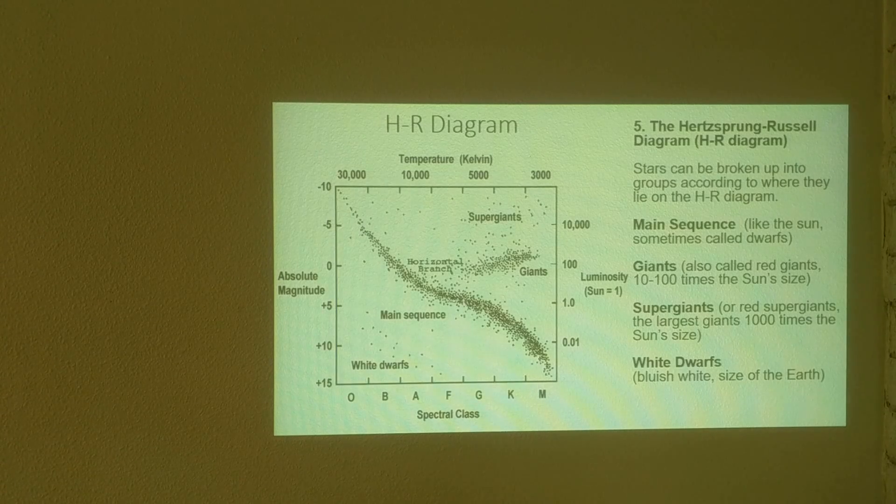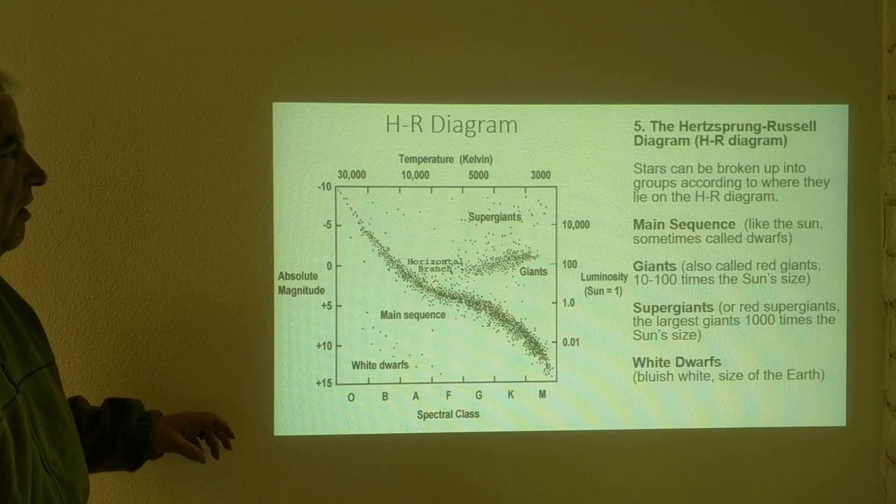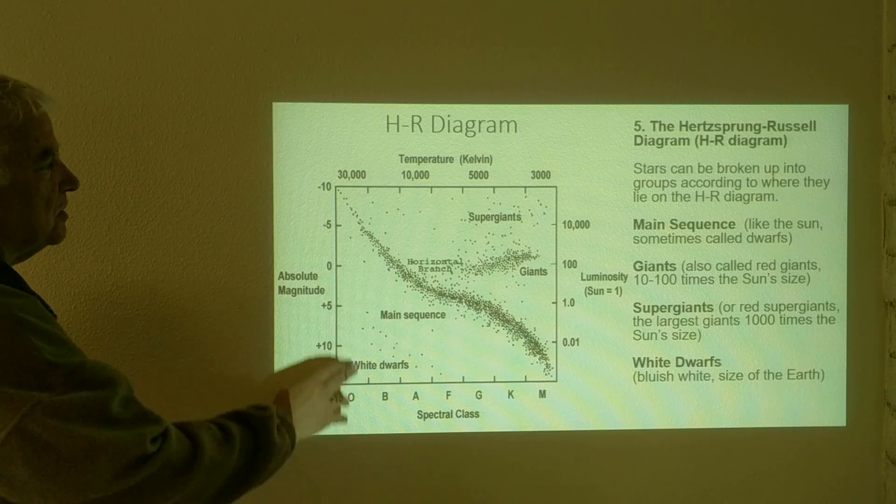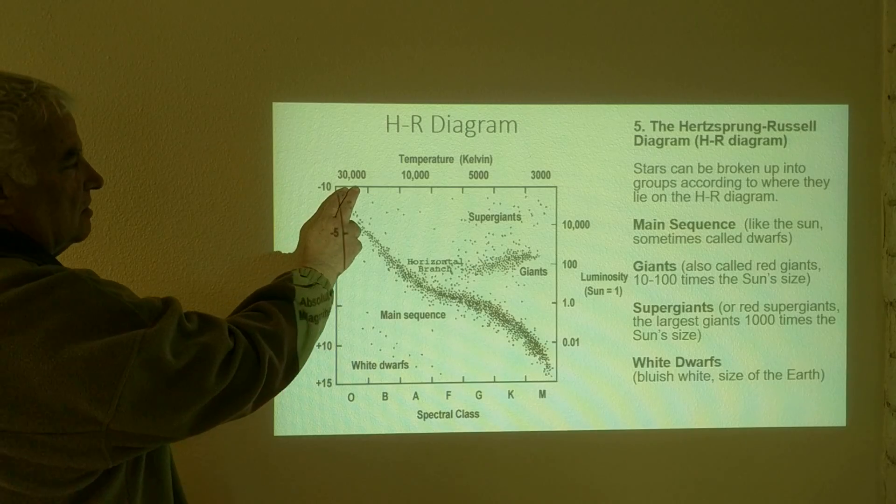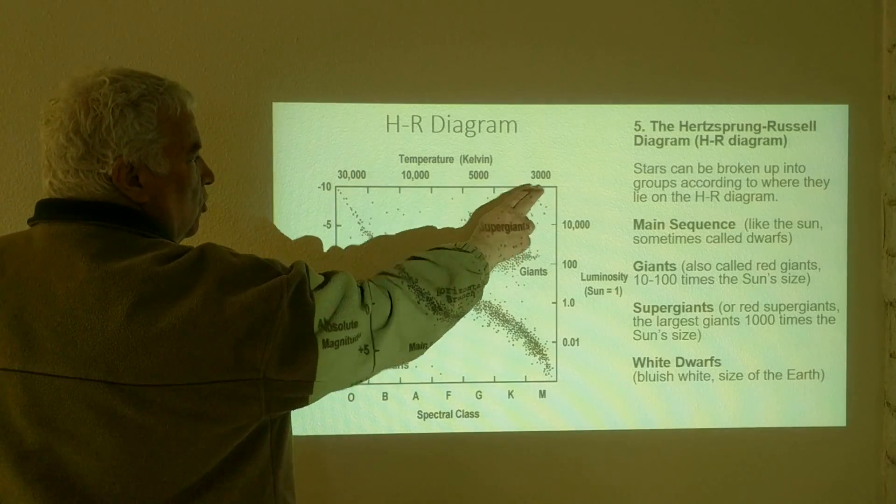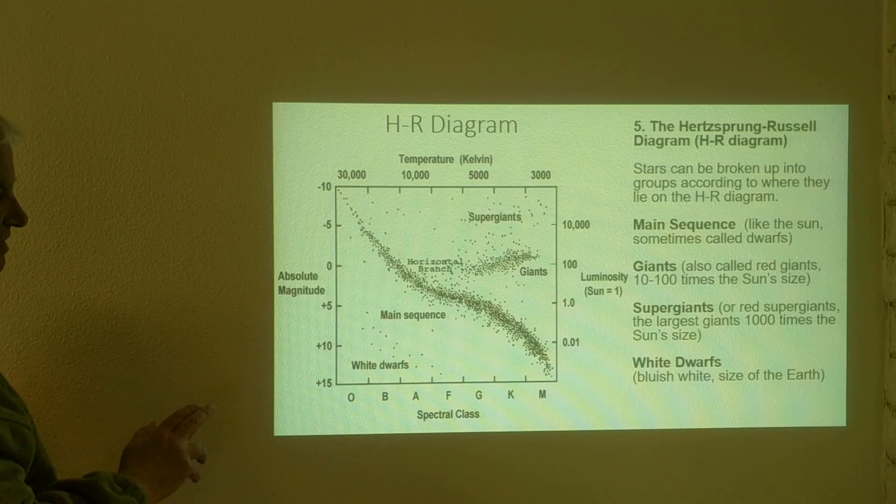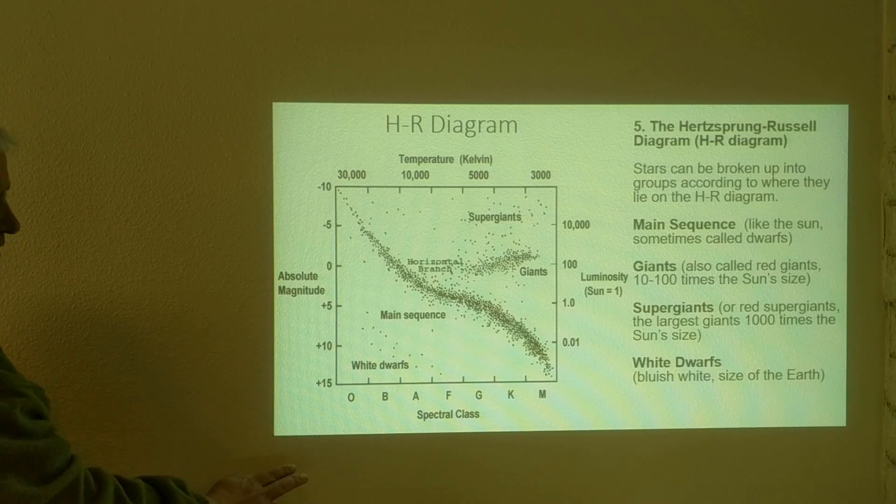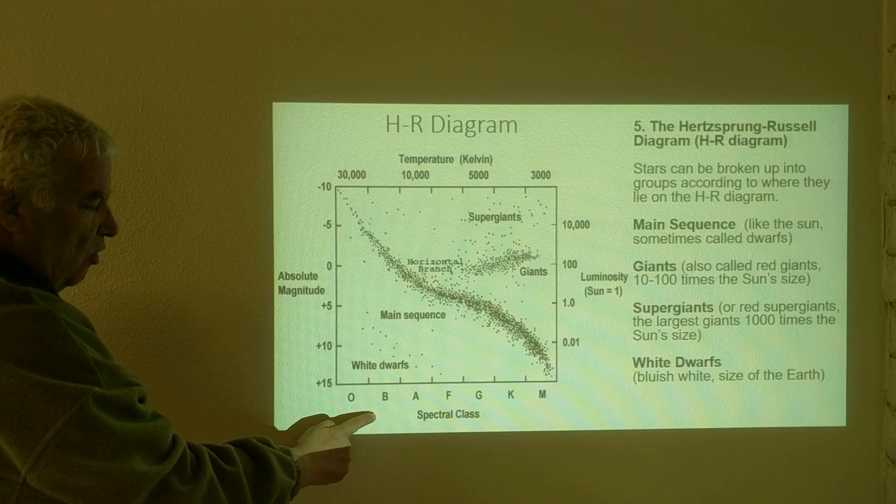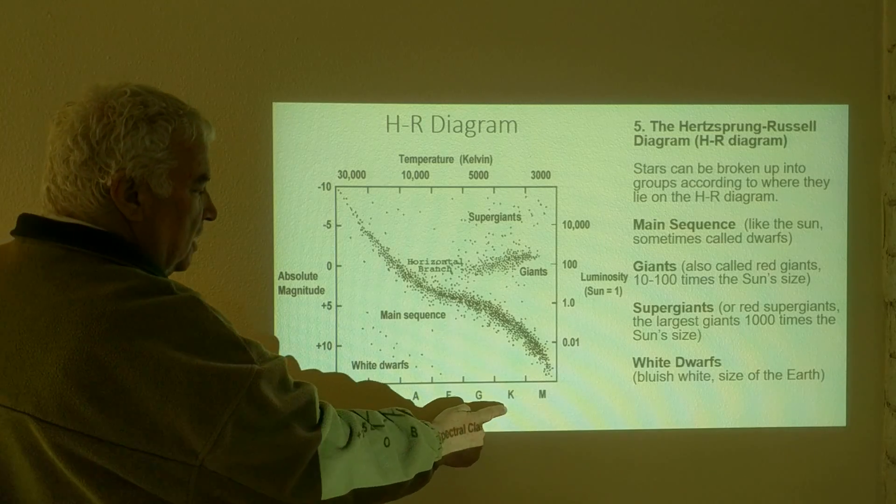So here's an example where these are plotted. The temperature is plotted from the hottest on the left to the coolest. This may seem strange, but this is the way it's done. We go with the sequence O, B, A, F, G, K, M,